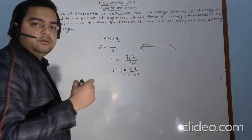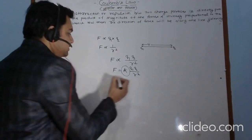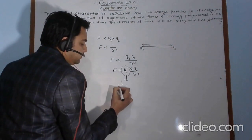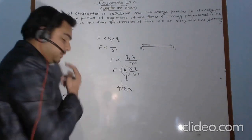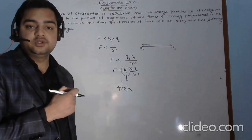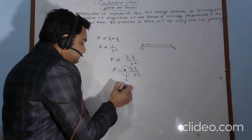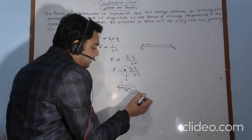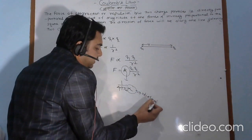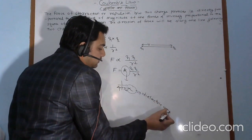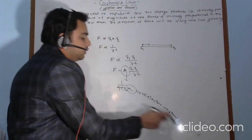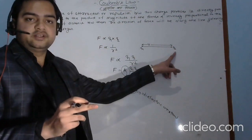And the k is a proportionality constant. Its value is 1 upon 4 pi epsilon naught times k. Here the k is the dielectric constant of the medium between these two charge particles.